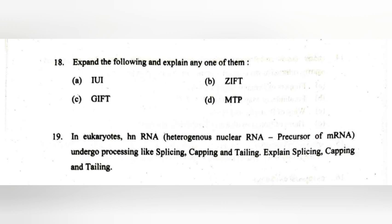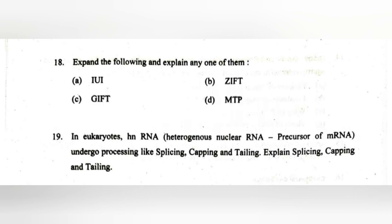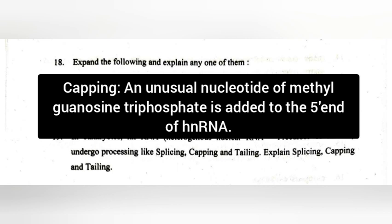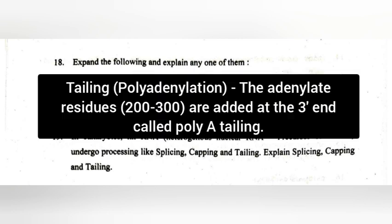19. In eukaryotes, hnRNA undergoes processing like splicing, capping, and tailing. Explain each. Answer: Splicing — introns are removed from hnRNA and exons are joined together. Capping — an unusual nucleotide, methylguanosine triphosphate, is added to the 5' end of hnRNA. Tailing (polyadenylation) — adenylate residues are added at the 3' end, called poly-A tailing.